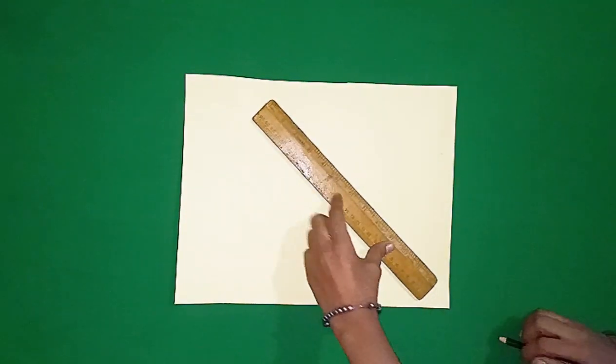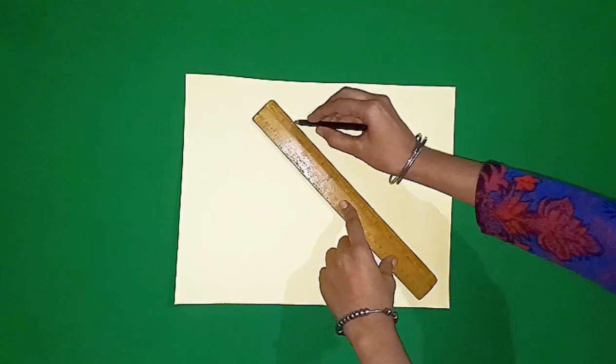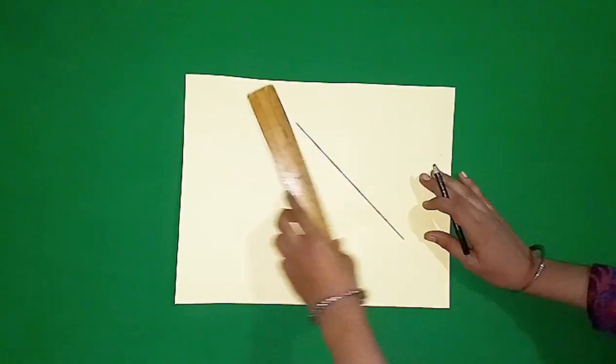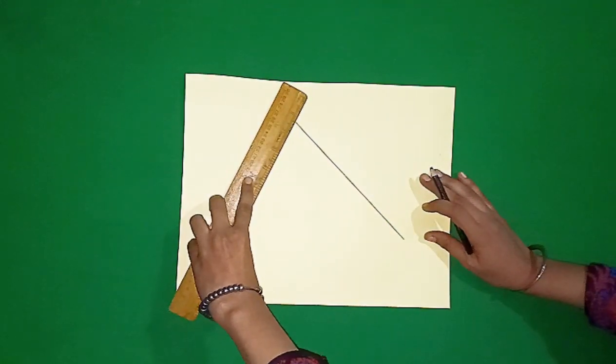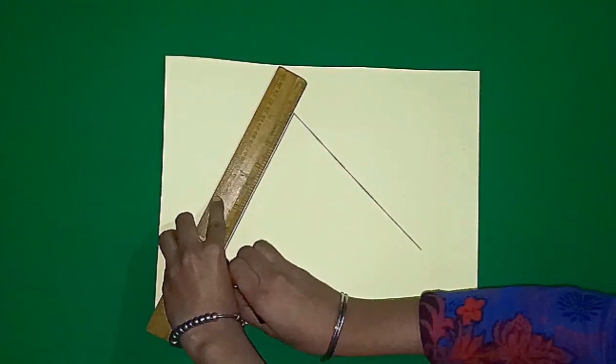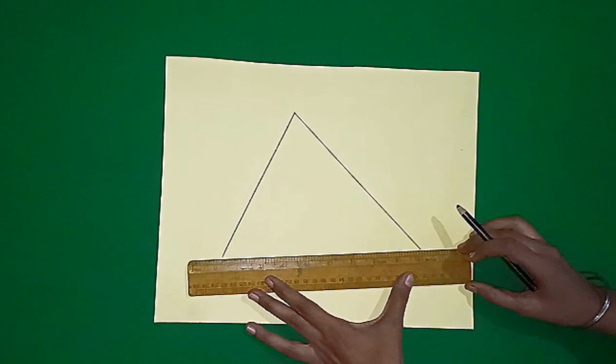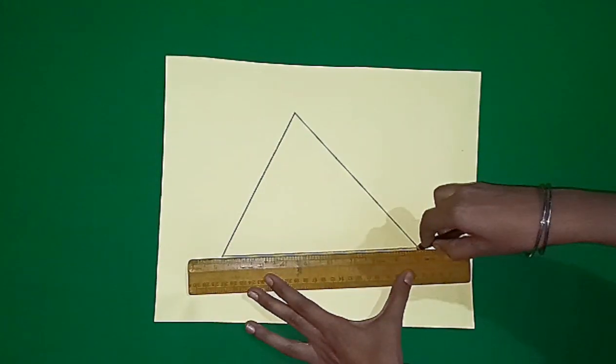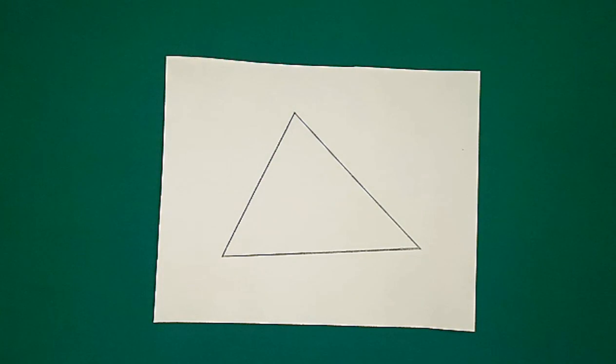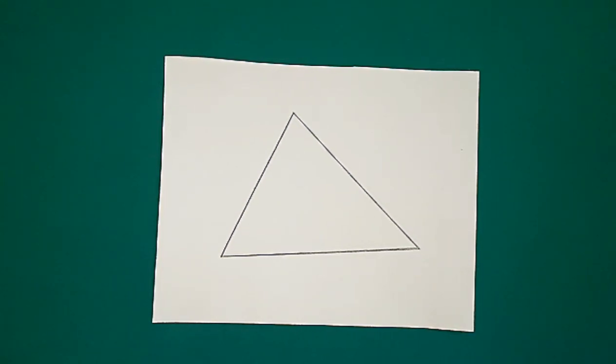Dear students, here I have a piece of paper and I am going to draw a shape on it. Now, I draw a slanting line on it with the help of scale. Now, I draw a slanting line from one end to the other. Let me now match these two lines. Students, look at this figure. What does this figure look like? Yes, this figure is like a triangle.